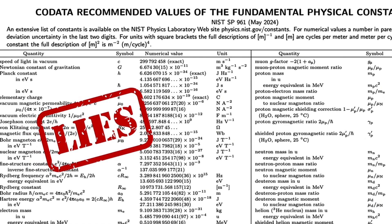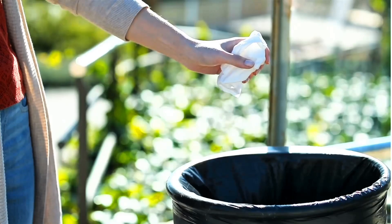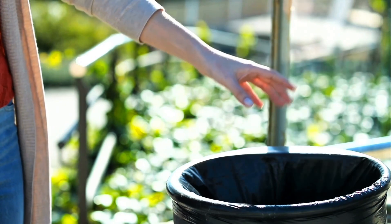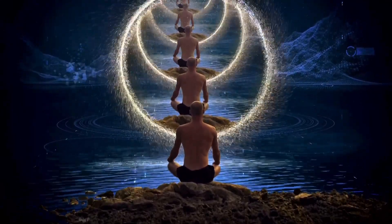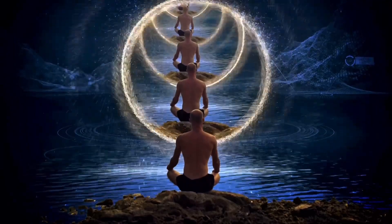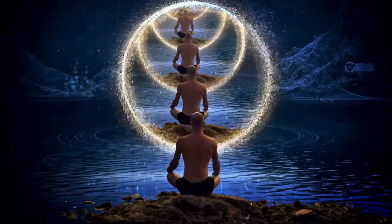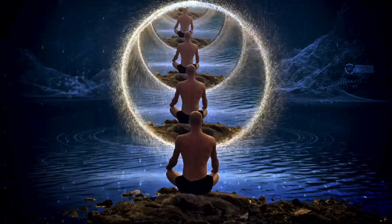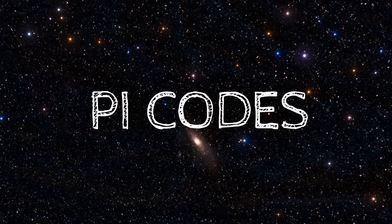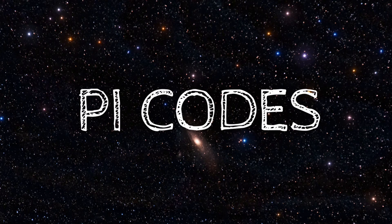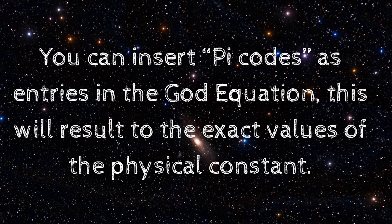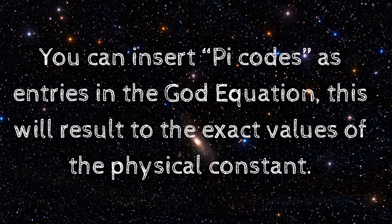Meanwhile, we have a task at hand, and it is to find the true values of these physical constants. These right here are false values, and they lead to a dead end with no progress in physics. Again, pi is the originator of the universe, and it always comes to our rescue. The values of the physical constants are not the only values we can insert in the God equation. We can insert pi codes, and inserting these pi codes will lead to a physical constant.